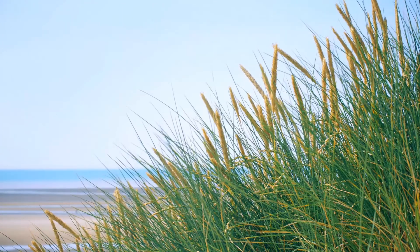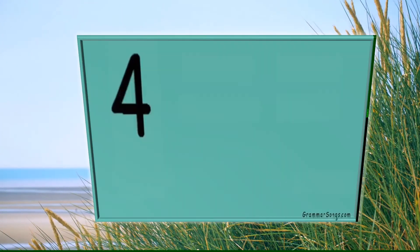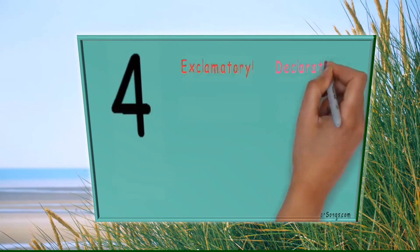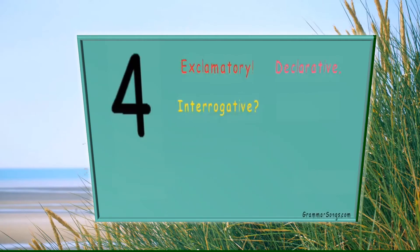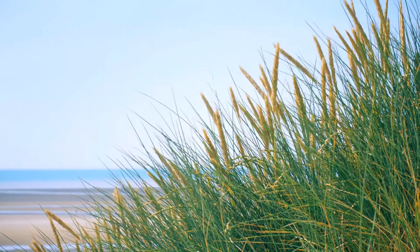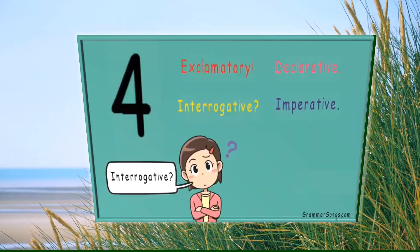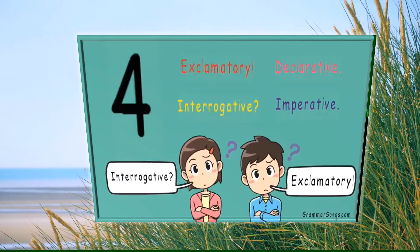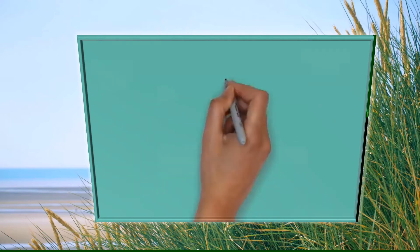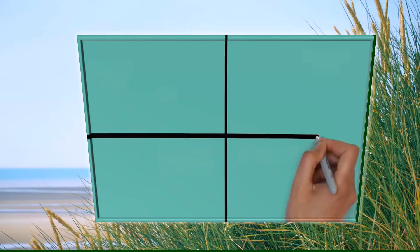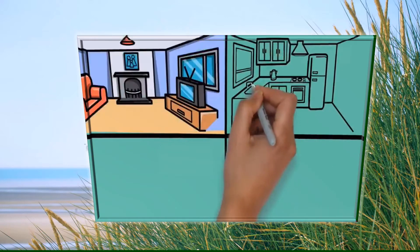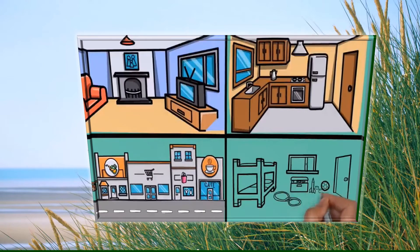There are four kinds of simple or complete sentences in the English language: exclamatory, declarative, interrogative, and imperative. Those big words might sound scary, but we use all four kinds of sentences every day when we speak without even thinking about it.